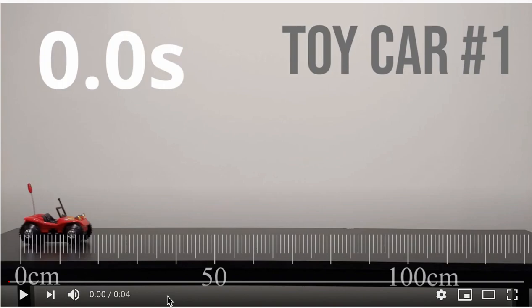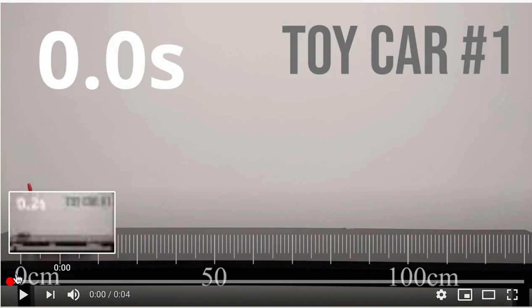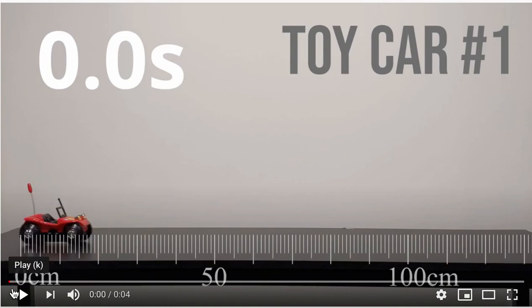And then I want to get a measurement at 0.5 seconds. So I could run play, but it's going to go pretty fast and I'm going to have to try to stop it at just the right moment.